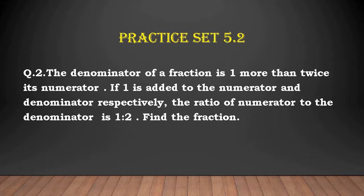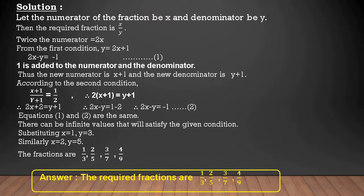Second question: the denominator of a fraction is 1 more than twice its numerator. If 1 is added to the numerator and denominator respectively, the ratio of numerator to denominator is 1 is to 2. Find the fraction. Solution: let the numerator of the fraction be X and the denominator be Y. The required fraction is X upon Y. Twice the numerator is 2X. From the first condition, Y is equal to 2X plus 1. Rearranging, we get 2X minus Y is equal to minus 1. Number this equation as 1.